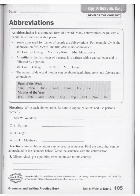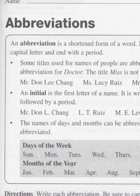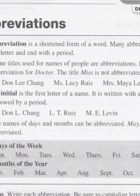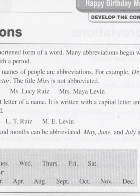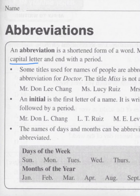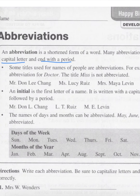Hello, third graders. This week in grammar, we're looking at abbreviations. As I zoom in a little bit, it says an abbreviation is a shortened form of a word. Many abbreviations begin with a capital letter and end with a period — many, not all. Some titles use names of people for abbreviations.